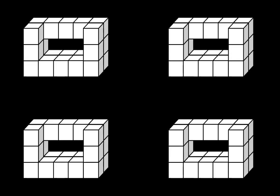Let's continue by seeing how some people break this structure apart. Here are four copies of the structure. One way is to see a group of six, another group of six, another group of six, and then a group of three.